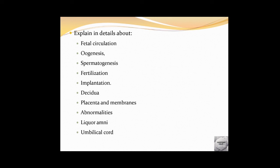Placenta — you will have to write about it, including placenta functions. Abnormalities of the placenta can also be asked. Umbilical cord — what kind of cord it is. You can also be asked about fetal circulation.